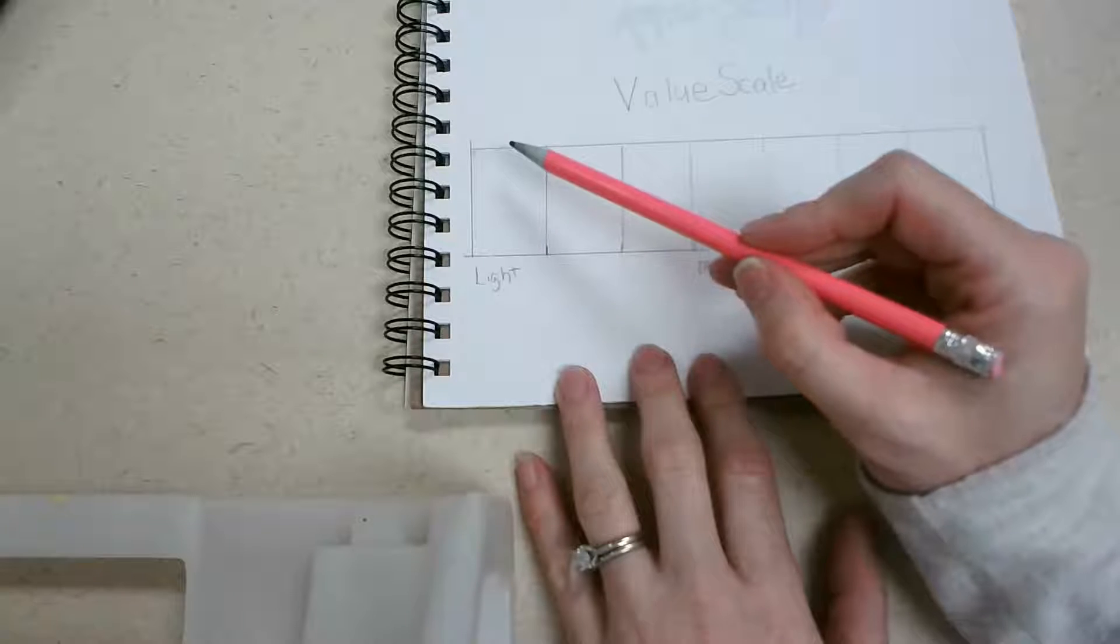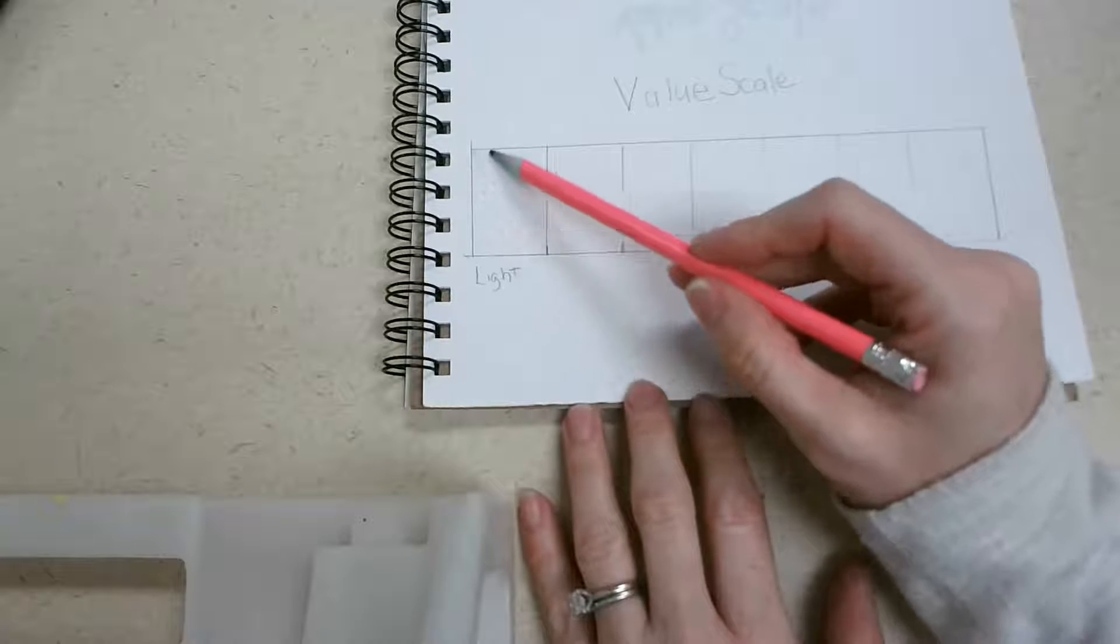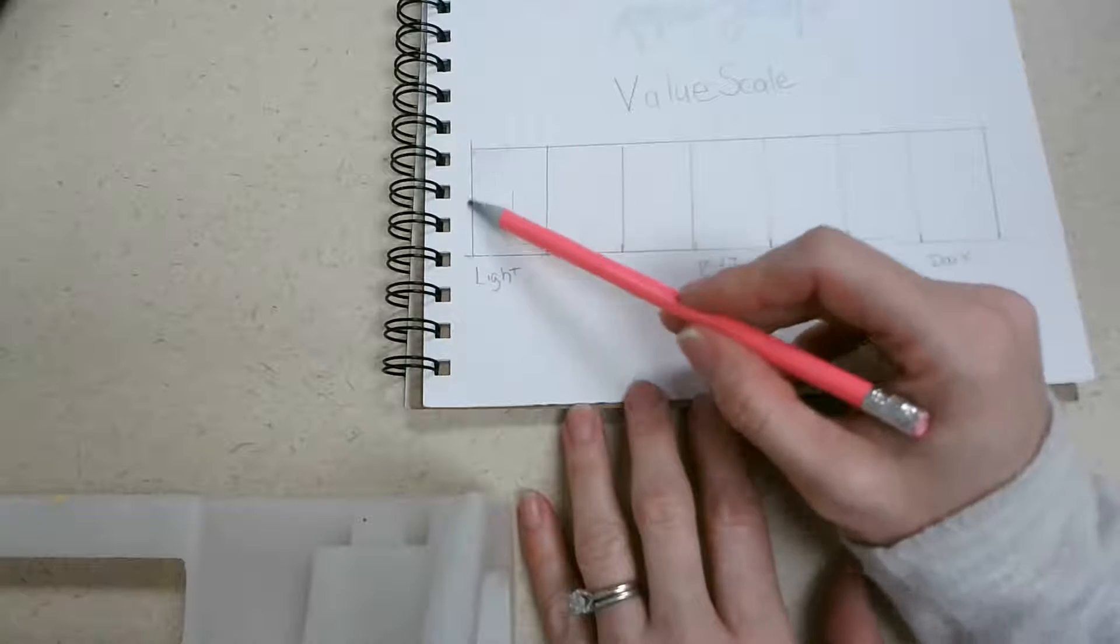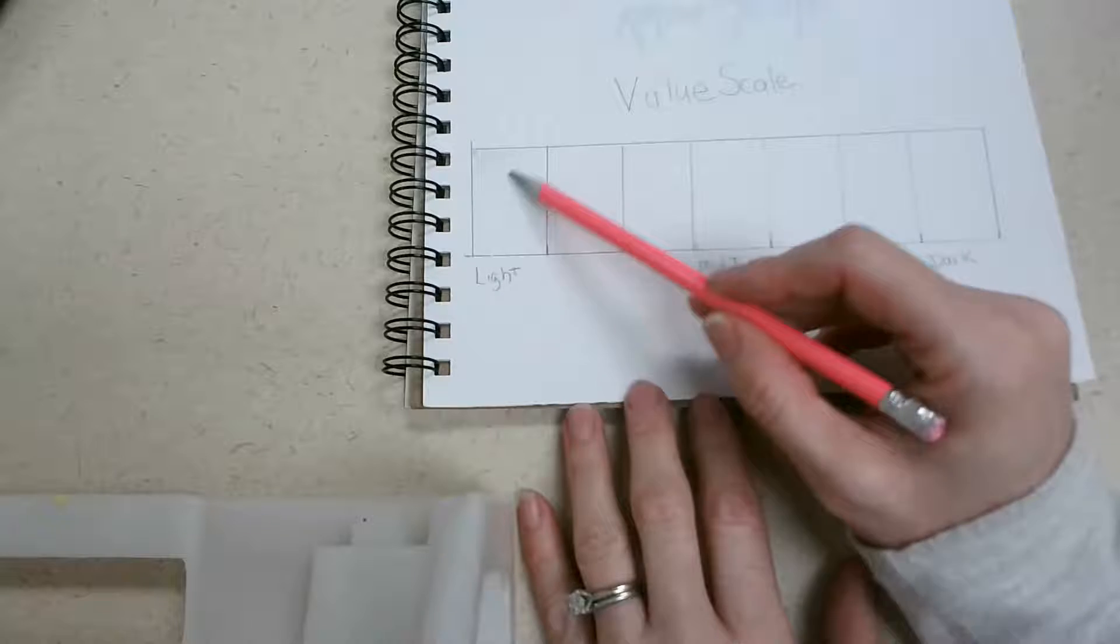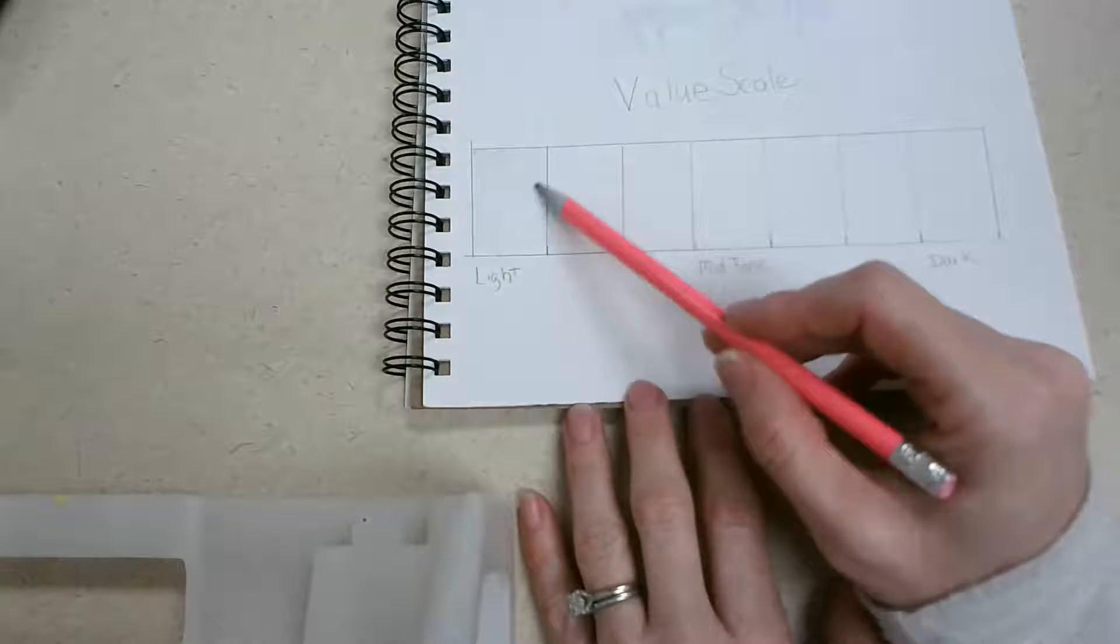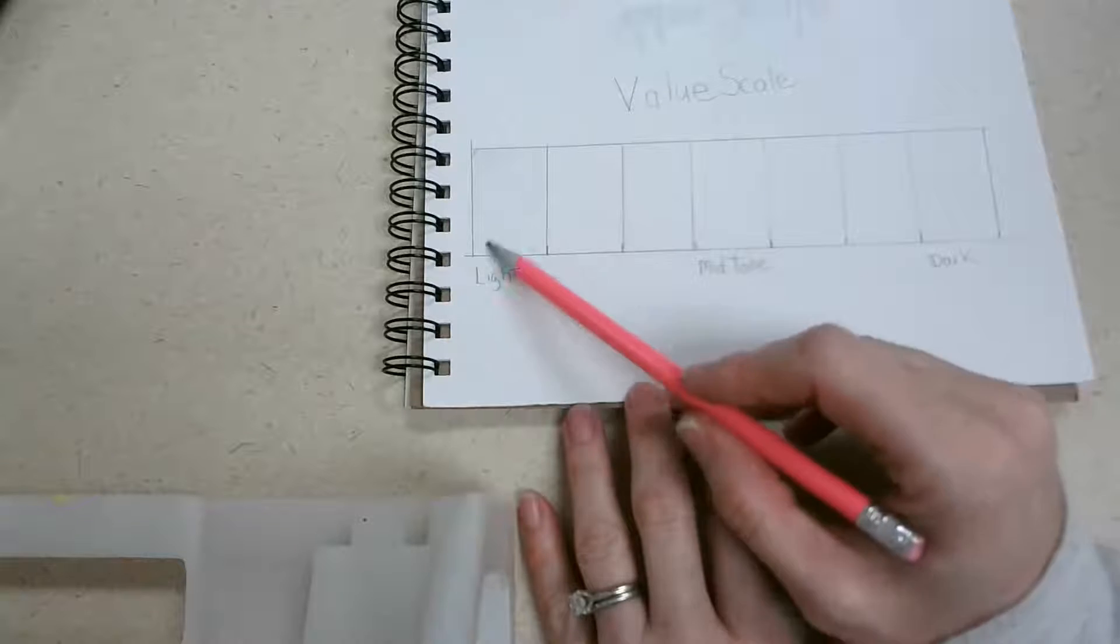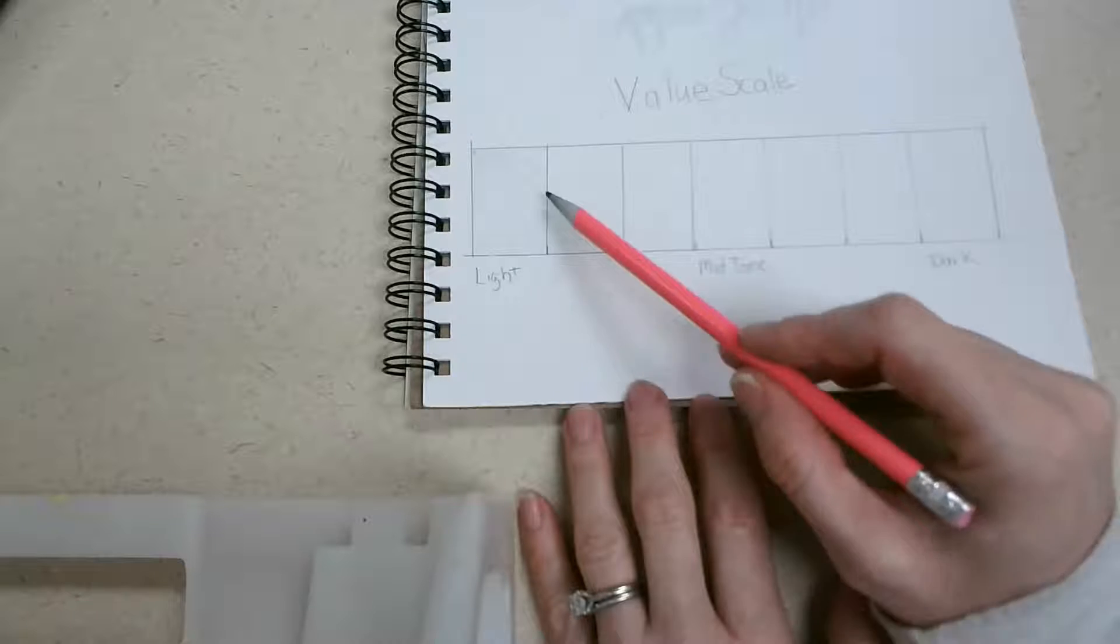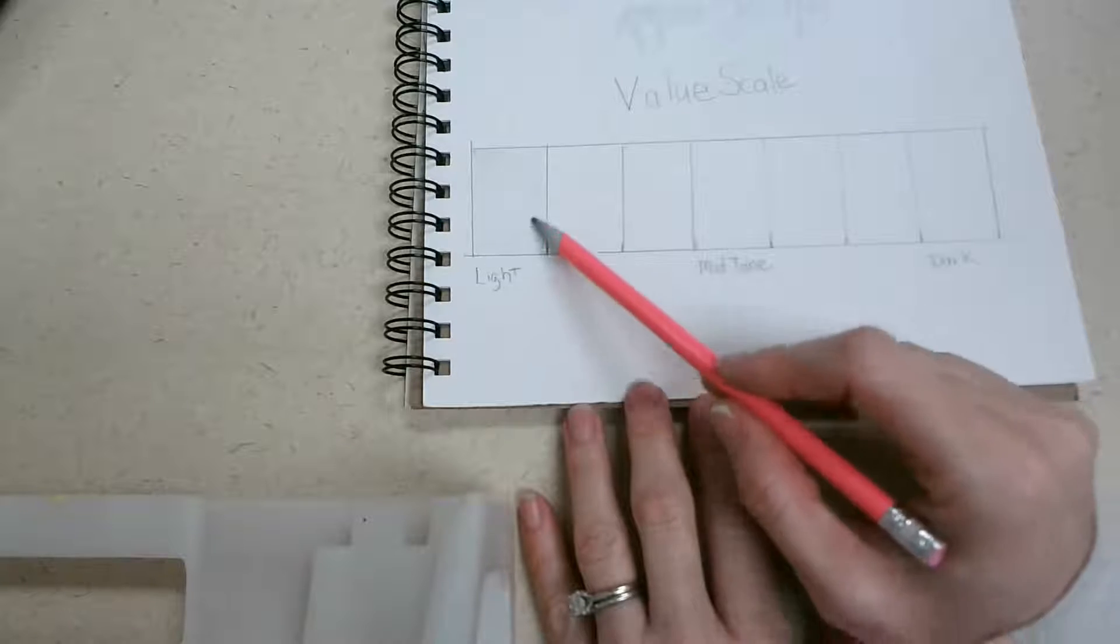So if you notice, I'm holding my pencil at the end of my pencil and I'm just going to create really light lines. I'm just letting my pencil basically drag across the page, trying to create my lightest value. Now anything that I get outside of my box, that's okay, I can always go back and clean it up later with an eraser.